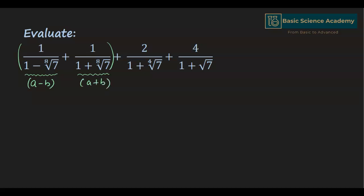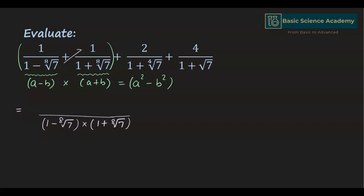When we add these, we will have a minus b multiplied by a plus b in the denominator, for which we can use the formula: a minus b multiplied by a plus b equals a squared minus b squared. The common factor in the denominator is 1 minus 8th root of 7 multiplied by 1 plus 8th root of 7. To get the numerator we cross multiply: 1 by 1 minus 8th root of 7, and 1 by 1 plus 8th root of 7.